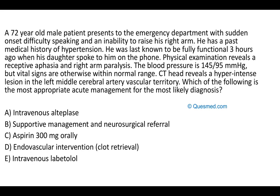The answer to question two is B, supportive management and neurosurgical referral. A 72-year-old man with sudden difficulty speaking and right arm weakness has a blood pressure of 145/95, receptive aphasia, and right arm paralysis. The CT head reveals a hyperintense lesion in the left middle cerebral artery territory — hyperintensity indicates a hemorrhagic stroke rather than ischemic.